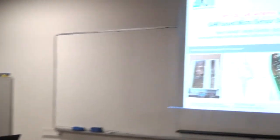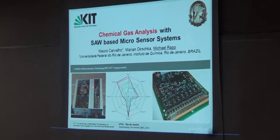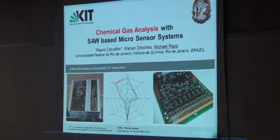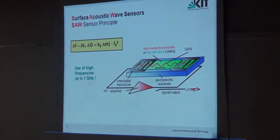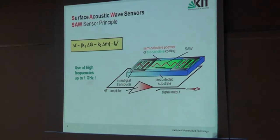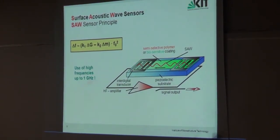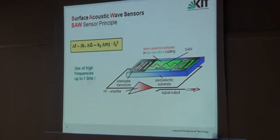The first section of the talk focuses on chemical gas analysis with surface acoustic wave-based microsensor systems. First I want to tell you about the basic principle. We have a Surface Acoustic Wave device, which is usually used in mobile phones. All the high-frequency-related electronics nowadays work on these devices.